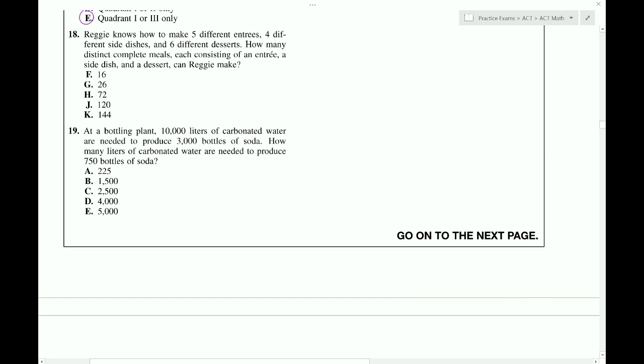Reggie knows how to make five different entrees, four different sides, and six different desserts. How many different meals can Reggie make? So, this is a counting principle question. And it requires this dash method. So, we have to see how many ideas do we have for the first. There's five different entrees. So, we could choose any one of those five for our entree. Then, there are four different side dishes. So, we could choose any one of those four. And we can choose any one of these six options for dessert. So, we can mix and match. And means multiply. So, we just have to multiply the numbers. We get 30 times 4, which is 120. Choice J.